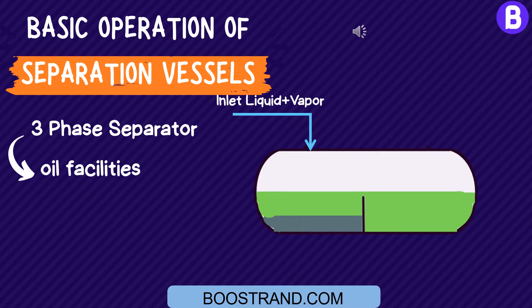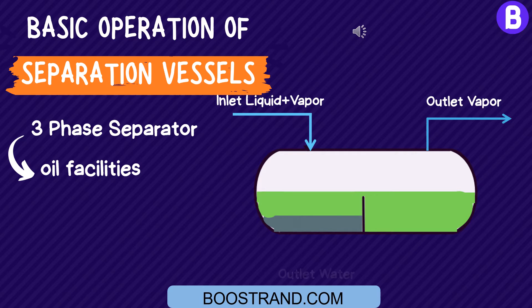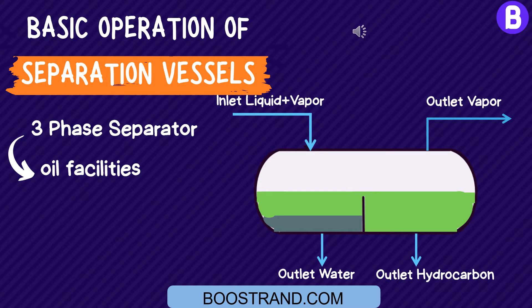When it is introduced to a three-phase separator, gas exits from the top of the separator, water is separated from the left side of the weir, and hydrocarbon is separated from the right side of the weir.